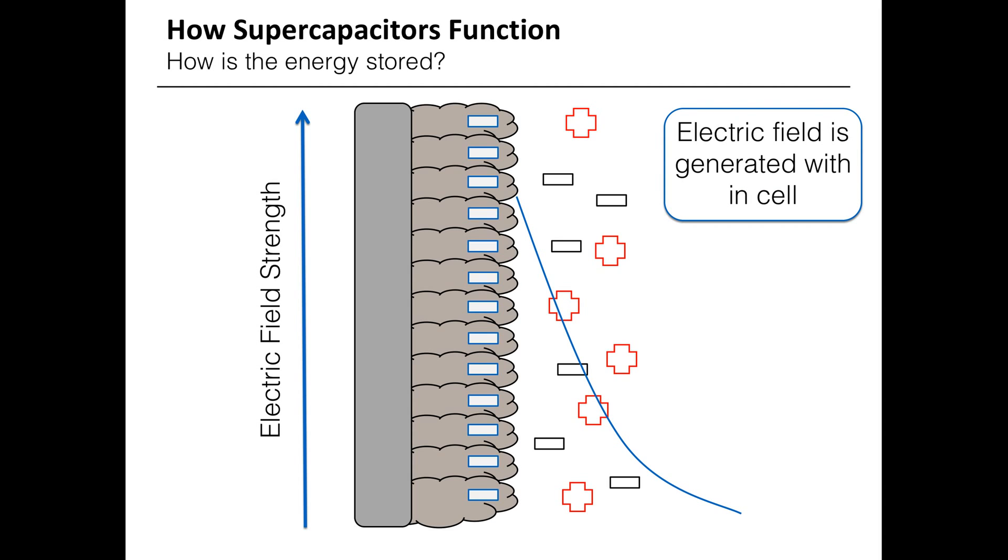An electrical field is generated near the electrode, attracting positive ions and repelling negative ions. The opposite is happening simultaneously at the positive electrode.